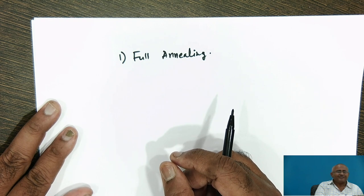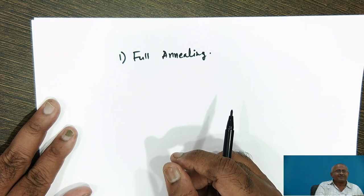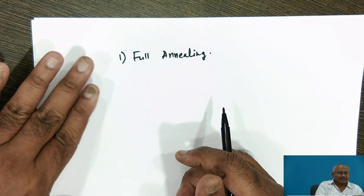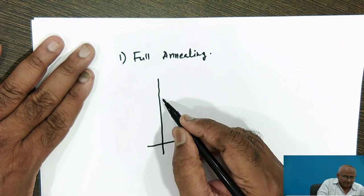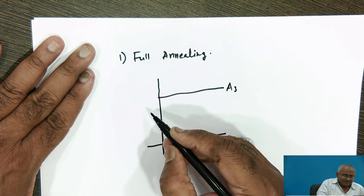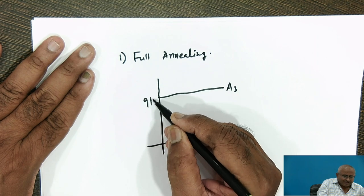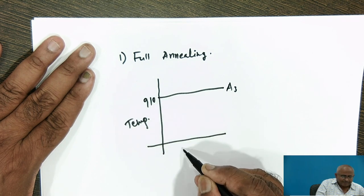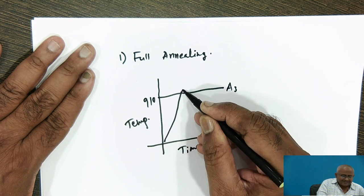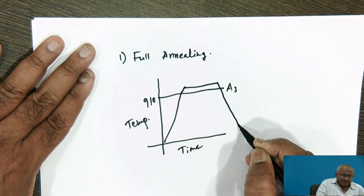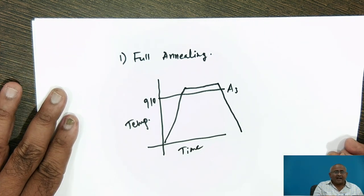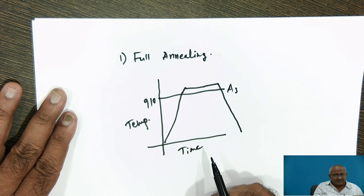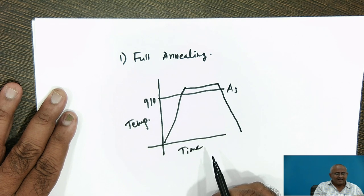Full annealing treatment is always carried out by heating the steel 25 to 30 degrees above the A3 temperature. If we plot a graph of temperature versus time, we can show the full annealing treatment with heating, holding, and cooling in the furnace very slowly. Sufficient holding is very essential to get the most desired structure and thereby desired properties.